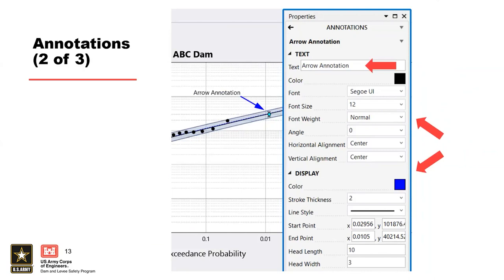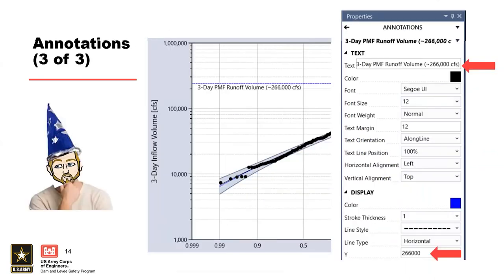Another common annotation is the horizontal line. The text format and location where the line crosses the y-axis can be updated in the properties window. In this example, you can see we've added a horizontal line for the three day PMF runoff volume with text that includes the value with CFS units, allowing us to visualize where that falls in our frequency curve.